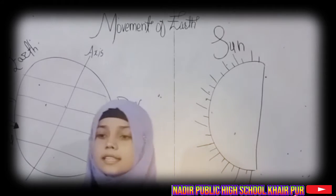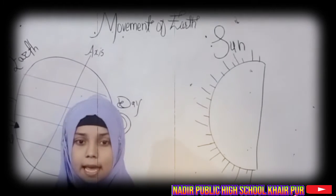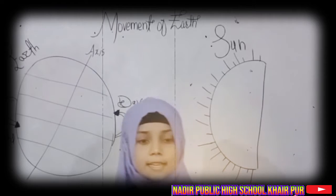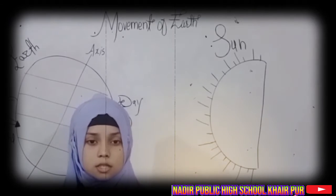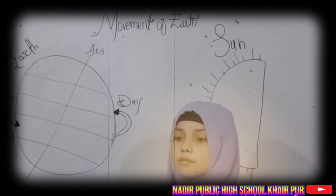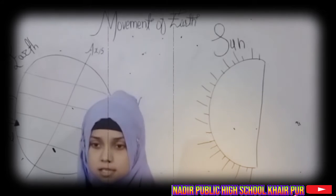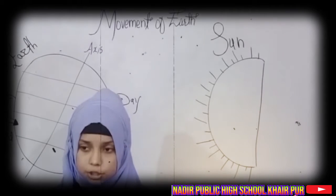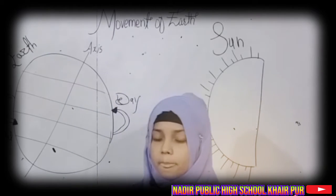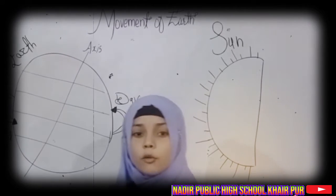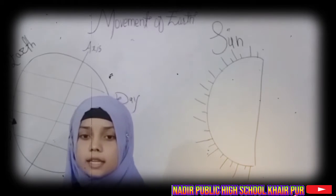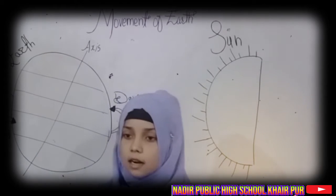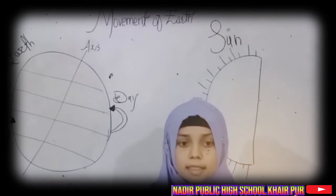The earth has two types of motions: rotation and revolution. The movement of the earth on its own axis is called rotation. The movement of the earth around the sun on a fixed path or orbit is called revolution.